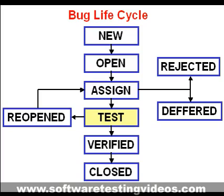Once the developer fixes the bug, he has to assign the bug to the testing team for the next round of testing. Before he releases the software with the bug fixed, he changes the state of the bug to test. This specifies that the bug has been fixed and is released to the testing team.